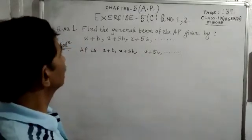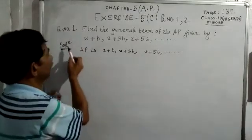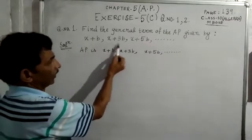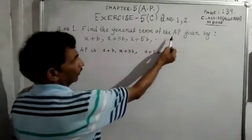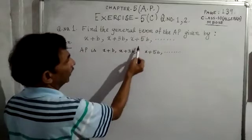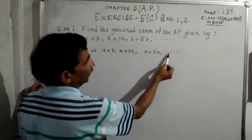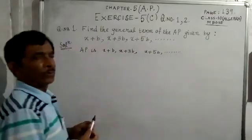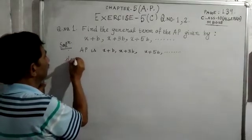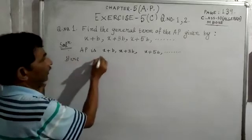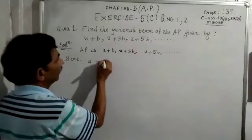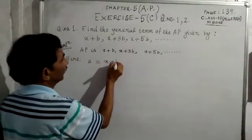Now let us find the solution. The AP is x plus b, x plus 3b, x plus 5b, dot dot dot. The first term, which we denote by the letter a, is equal to x plus b.